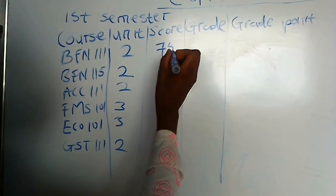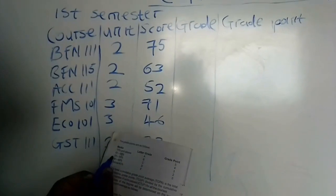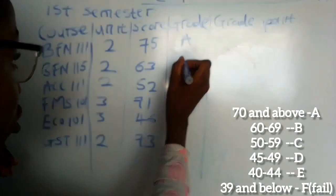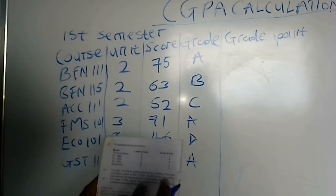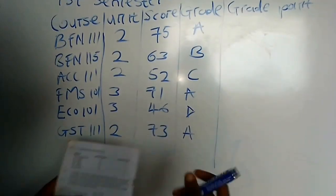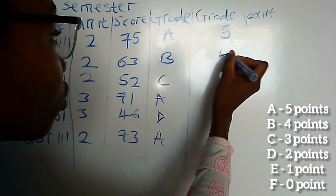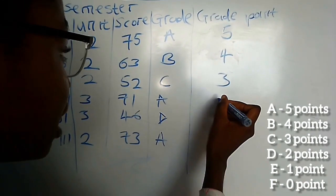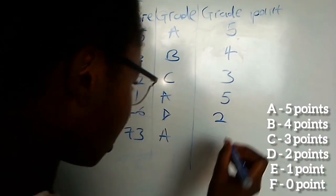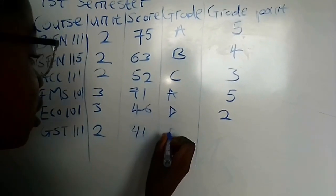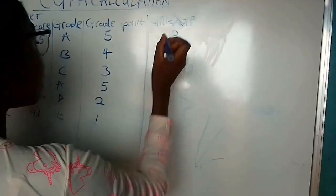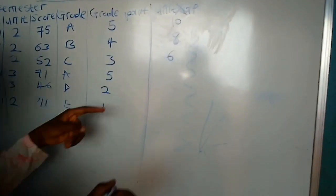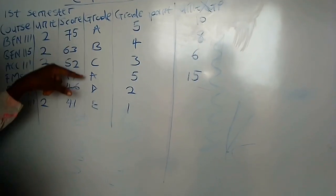Let's assume this person has 75 in one course — any score from 70 and above is an A. Another score falls under B, and another falls under C. There is always a grade point assigned to each grade letter: A is 5 points, B is 4 points, C is 3 points, D is 2 points, and E is 1 point. We now multiply each unit by its corresponding grade point: 2 times 5 is 10, 2 times 3 is 6, 3 times 5 is 15.